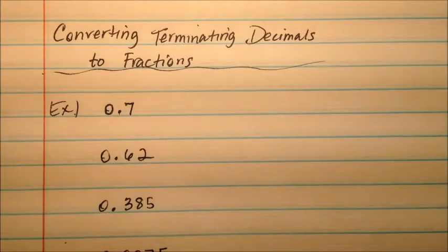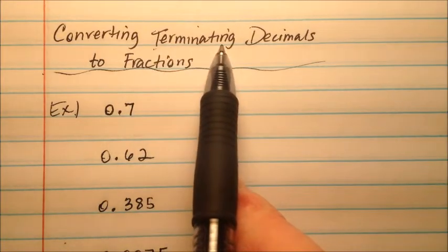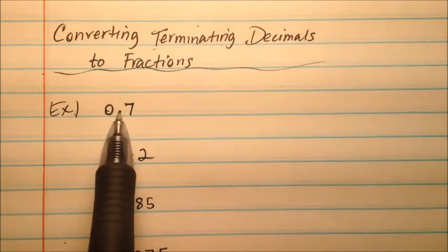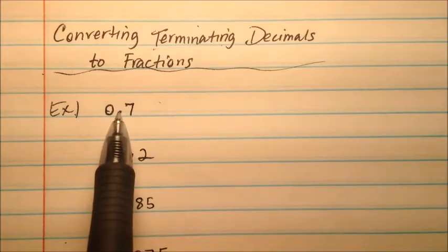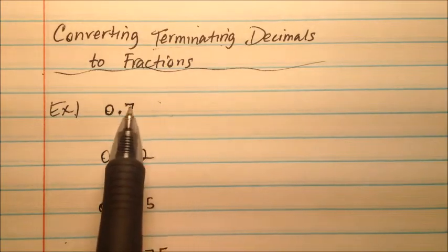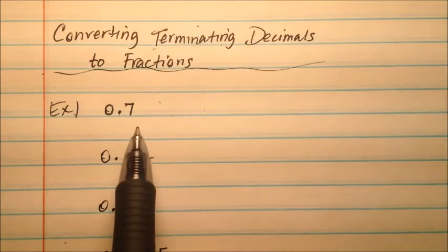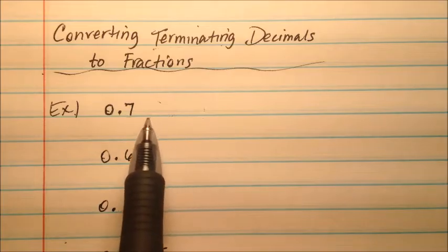In this video, I'm going to be discussing converting terminating decimals to fractions. A terminating decimal is any decimal that has some digits behind the decimal point, but the digits are going to stop. There's just a few of them, and then they have an ending point, as opposed to decimals that repeat forever and ever.